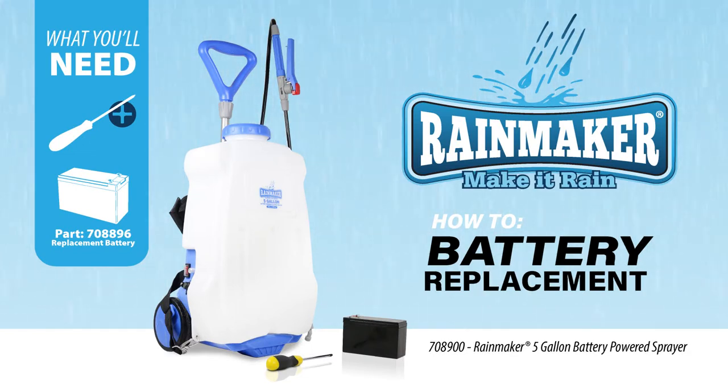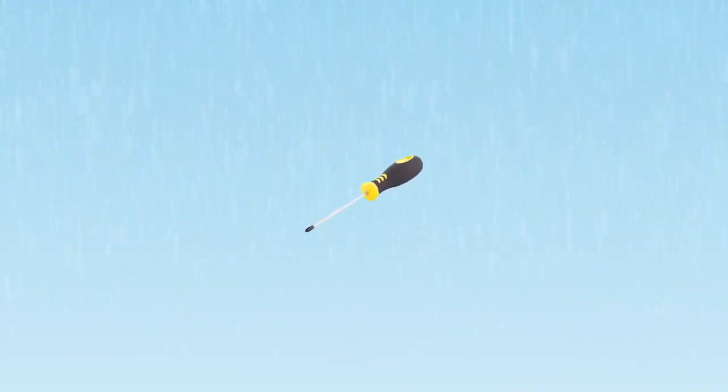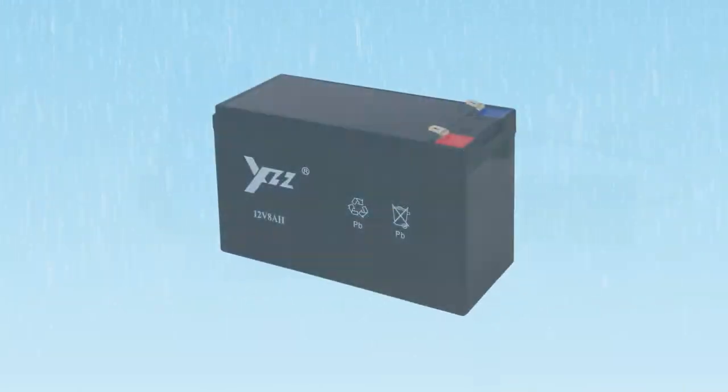This video will guide you through replacing the battery on a Rainmaker 5 gallon battery powered sprayer. All you need is a Phillips head screwdriver and a replacement battery.